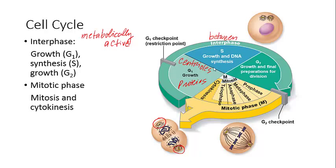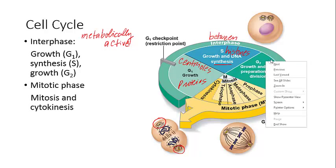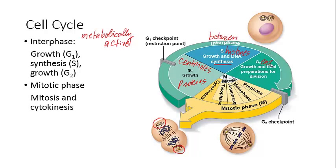During the S phase, the synthesis phase, new histones are created. The histones are very important because they help to organize the chromatin — they are made and then assembled into the chromatin. Chromatin is the form of DNA present during interphase. During the G2 phase, the last phase of interphase, a lot of important enzymes and other proteins are made that are going to be needed for the mitosis phase.